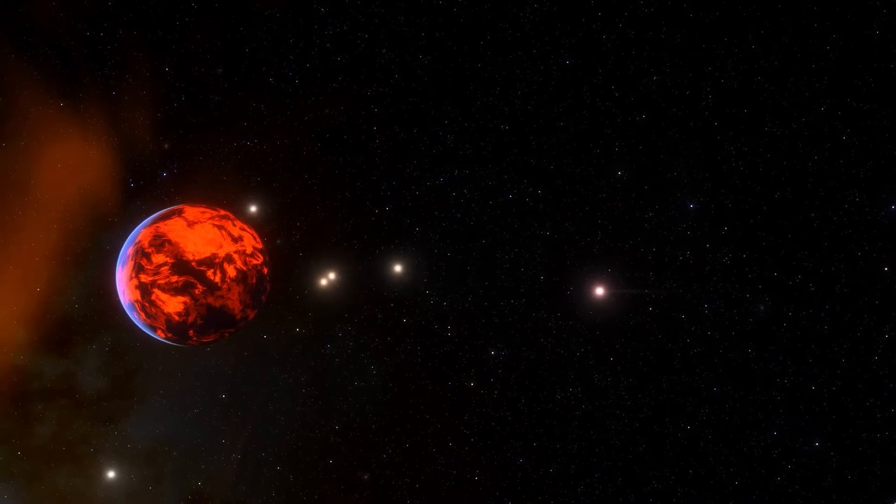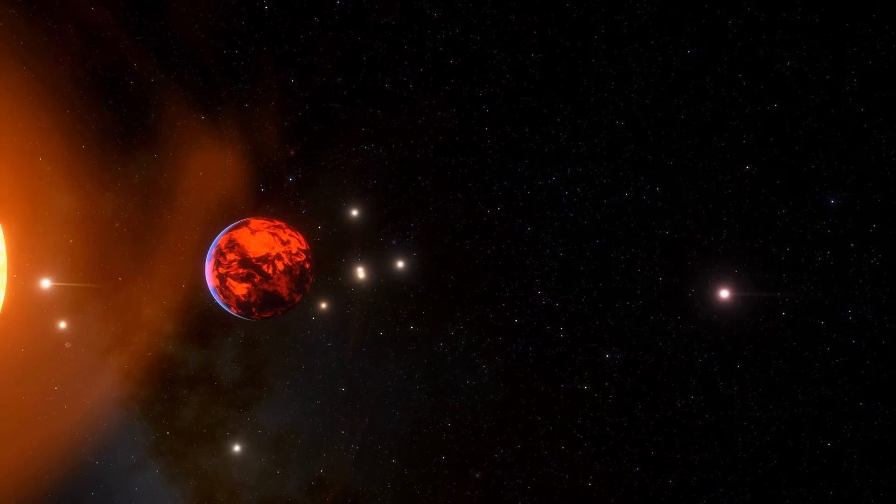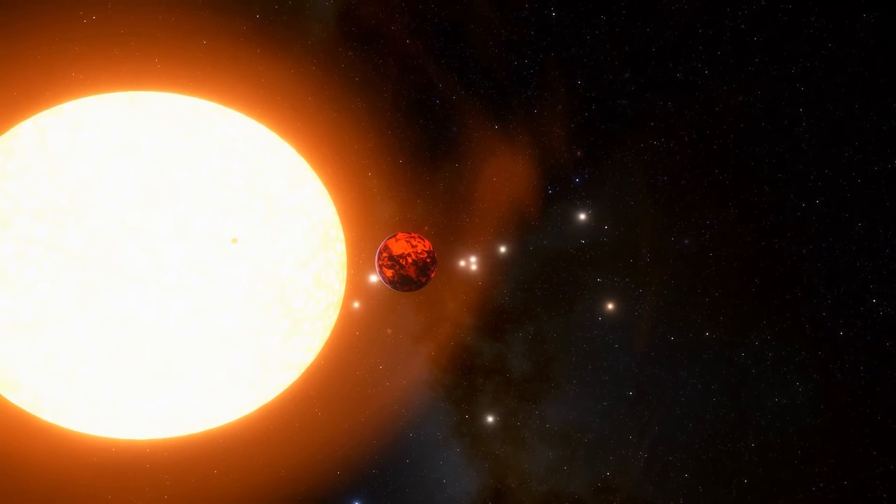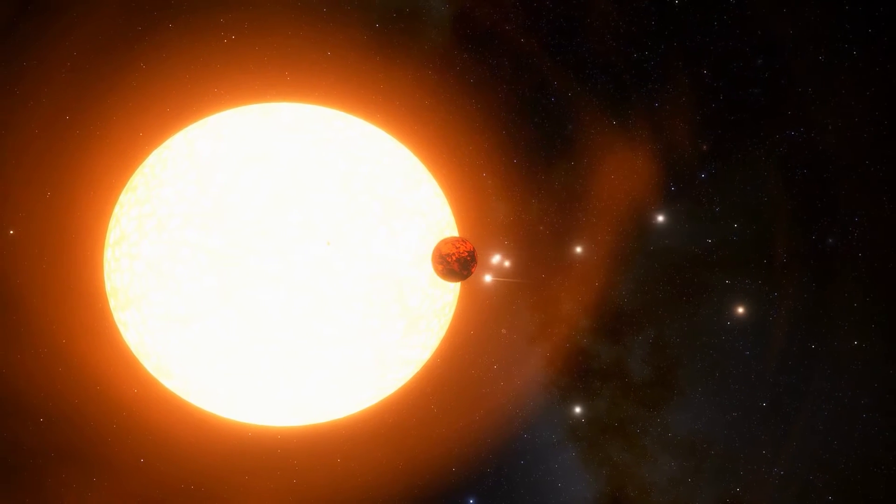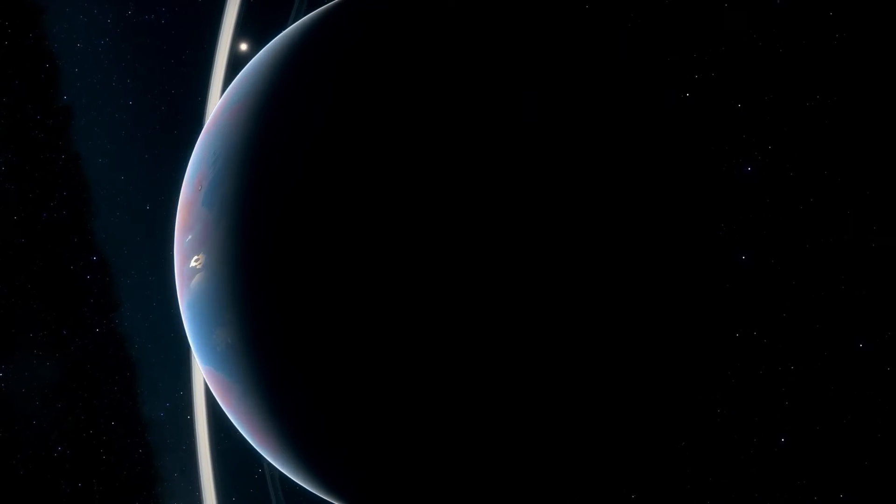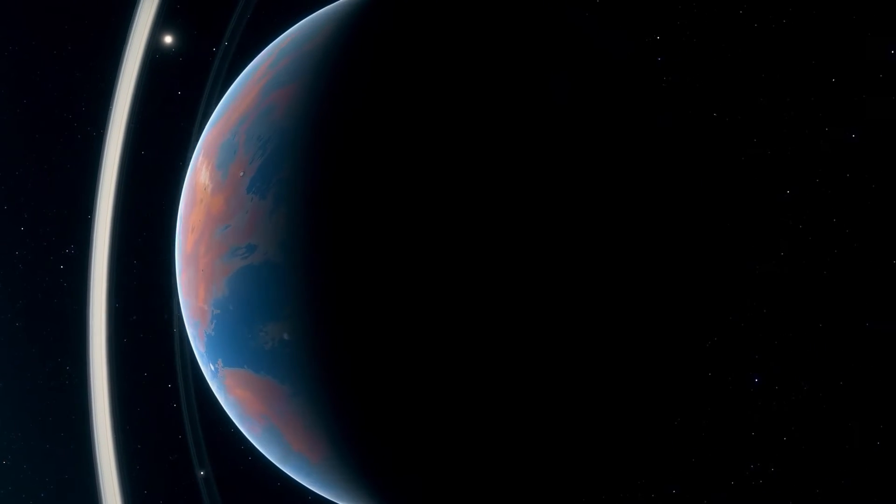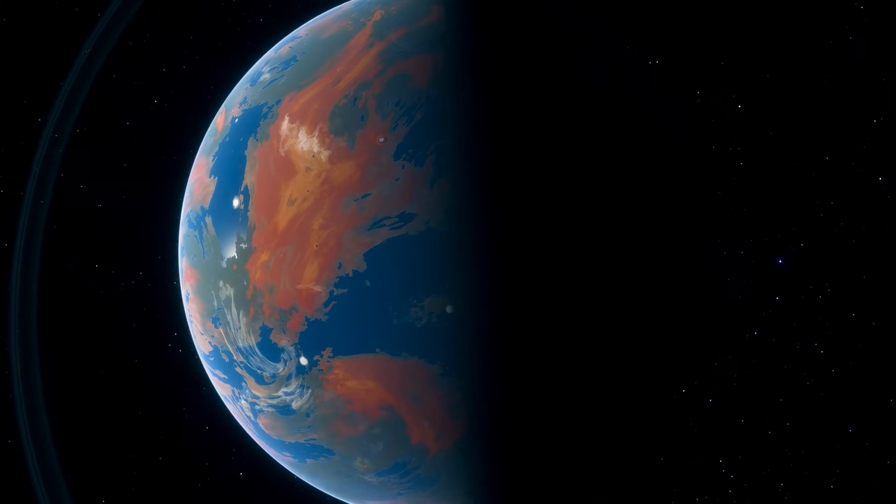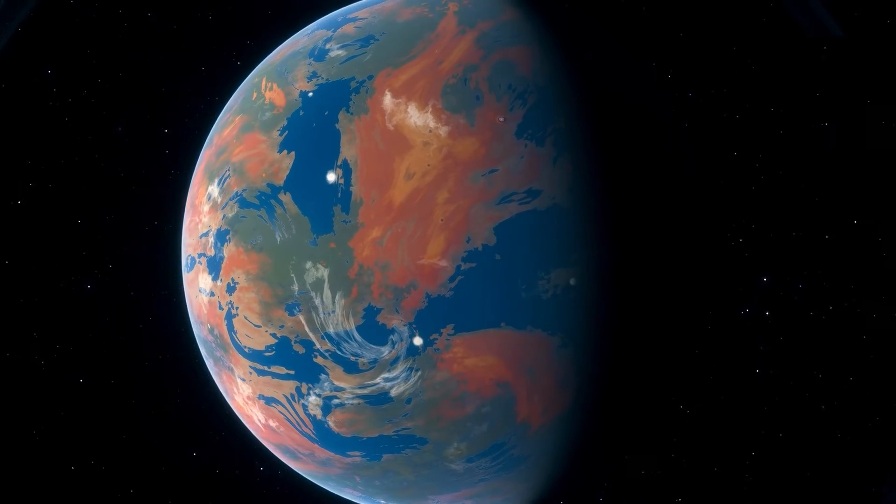Because the planet is tidally locked to its star, only one side of the planet is always illuminated by sunlight. The surface climate of the planet benefit from this locked structure. The researchers speculated that the average surface temperature may be anything from 24 degrees below zero to 10 degrees Fahrenheit, or minus 31 to minus 12 degrees Celsius, depending on which side was facing the star.